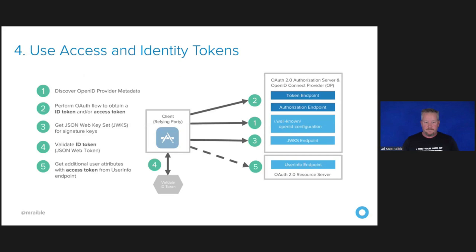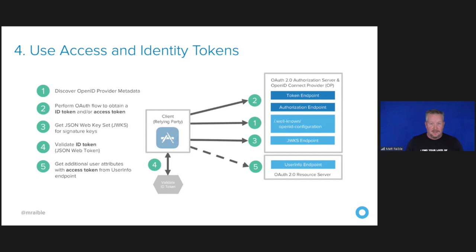Number four: use access and identity tokens. OAuth 2.0 has been providing delegated authorization since 2012, and OpenID Connect added federated identity on top of OAuth 2 in 2014. OpenID Connect doesn't exist without OAuth 2. OAuth 2.0 can live standalone, but it doesn't provide any identity — it only provides authorization information. Together, they offer a standard spec you can write code against and have confidence that it will work across identity providers.